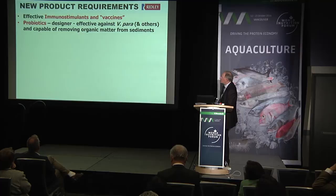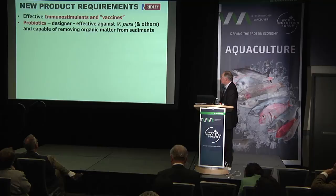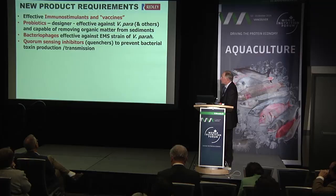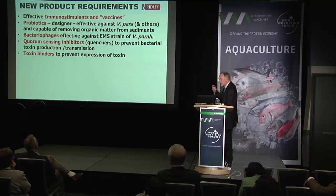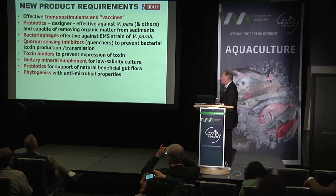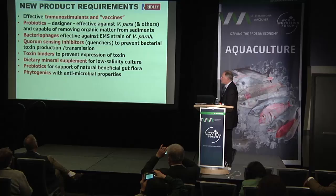In terms of new product requirements needed to fight these diseases: immunostimulants and vaccines; probiotics specifically designed to target the bacteria causing EMS; bacteriophages, which have shown some effect against EMS; quorum sensing inhibitors to prevent toxin production by stopping bacteria from switching on signals that tell the whole population to start producing toxins; toxin binders; mineral supplements; prebiotics; phytogenics; disinfectants; and other effective treatments for environmental problems occurring in the farms. Thank you.